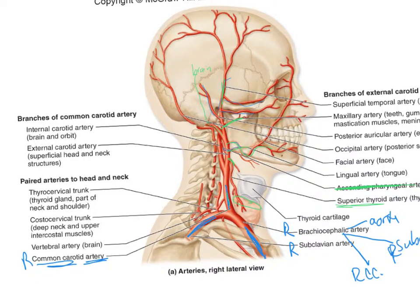Coming over to the subclavian, we've got this branch which is the thyrocervical, then you have the vertebral, and then you have the costocervical — so one, two, three. Learn the order; that will help you remember it. Thyrocervical tells you what it does: it goes to the thyroid and to the neck region, the cervical region. Costocervical goes to the ribs and then to the neck.